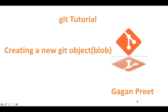In the previous videos we have discussed about different kinds of git objects: blob, tree, commit, and annotated tags. In this particular video we'll discuss a bit more about blobs.